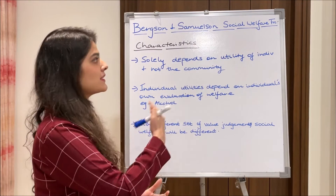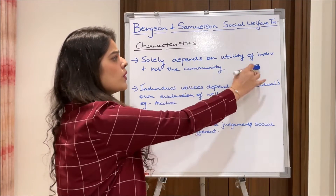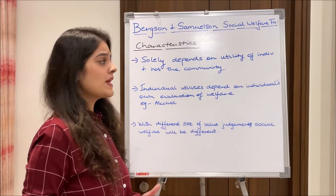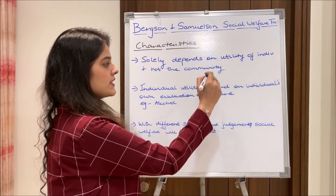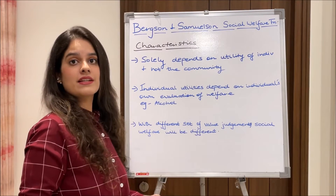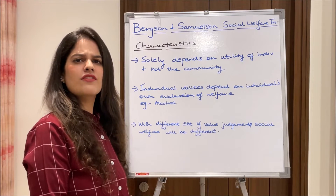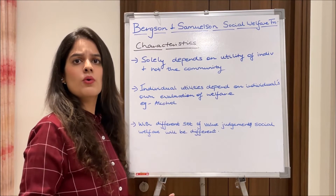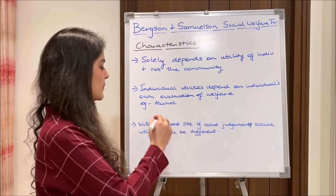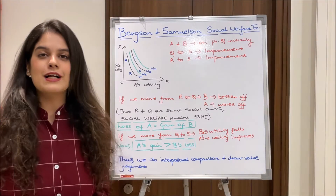Like the Paretian function, under the Bergson-Samuelson social welfare function, social welfare depends solely on the individual's utility and not the utility of the whole community. Second, individual utilities depend on each individual's own evaluation of welfare — for example, A might get a lot of utility from alcohol consumption, but B might get very little, zero, or even negative utility from it. Third, with different sets of value judgments, social welfare will be different.